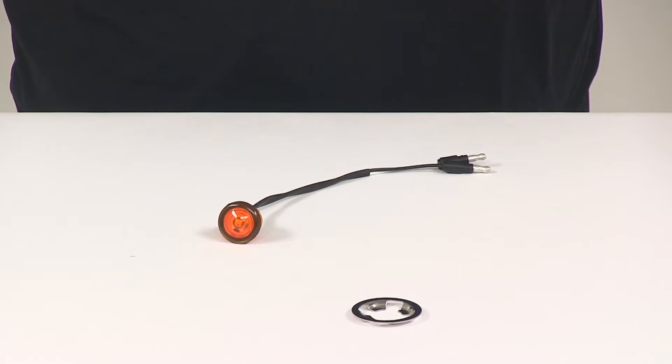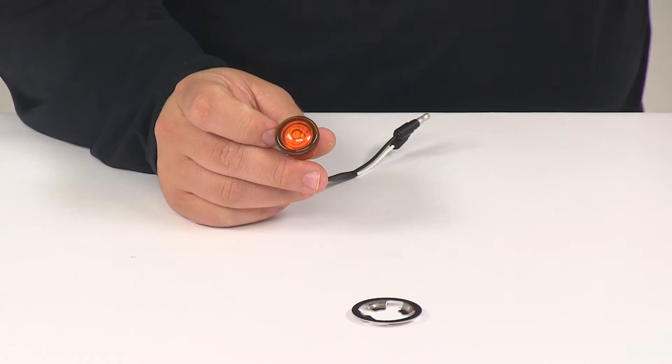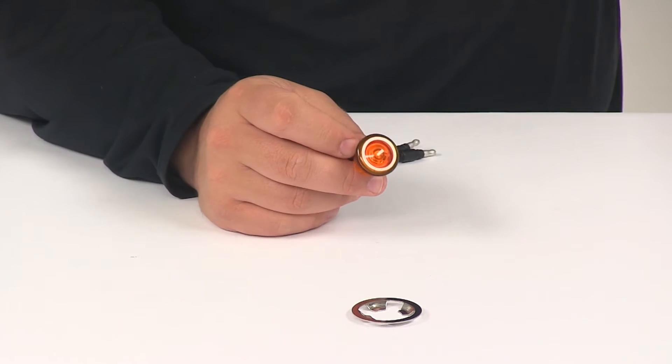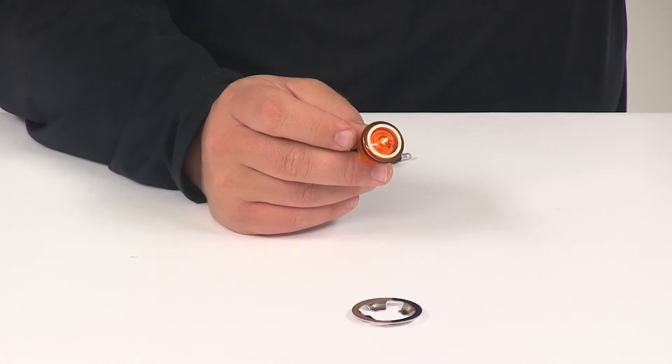Today we're going to be taking a look at the Optronics LED clearance and side marker light. This is a small round trailer light that functions as both a clearance light and a side marker light when properly mounted.